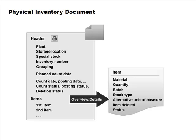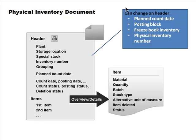The physical inventory document has a header with a plant and its own document number. You identify the stock management unit by specifying details like plant, storage location, and material. The document also contains the planned count date. For each item in the document you indicate the stock management unit to be counted, so a single document has a header plus many item lines representing the various SMUs.